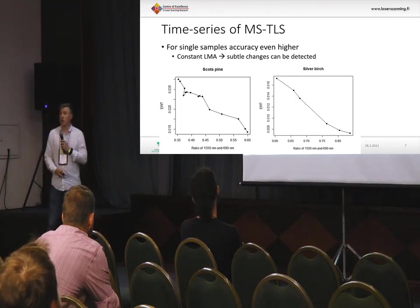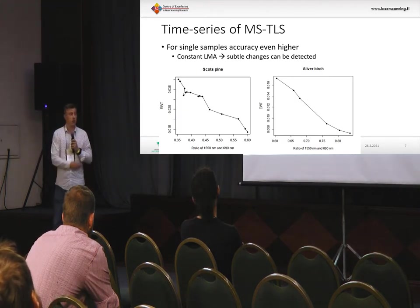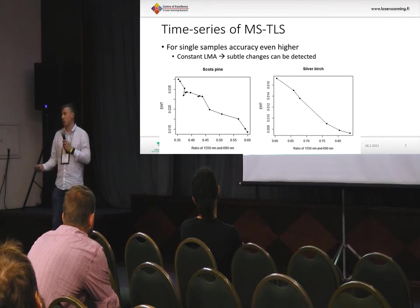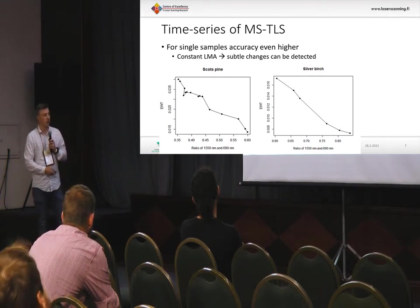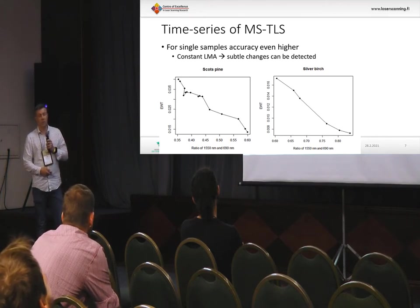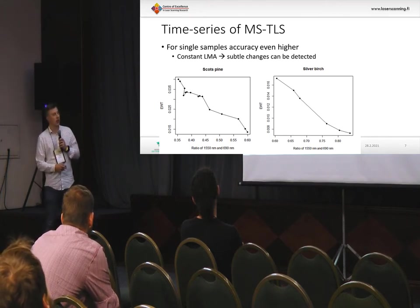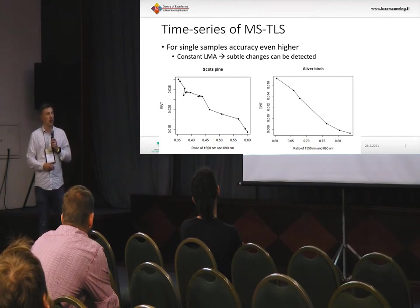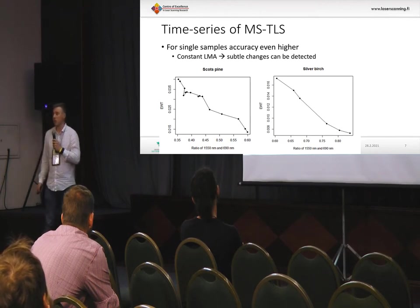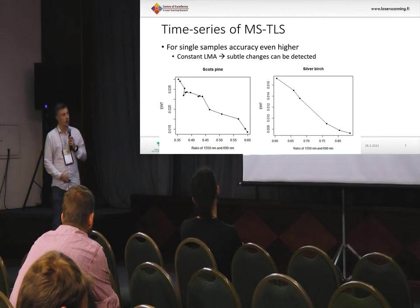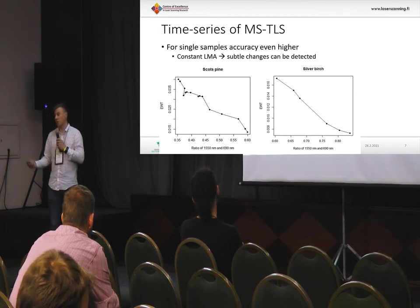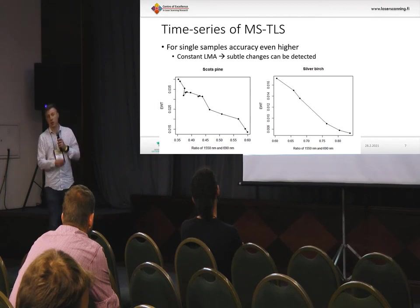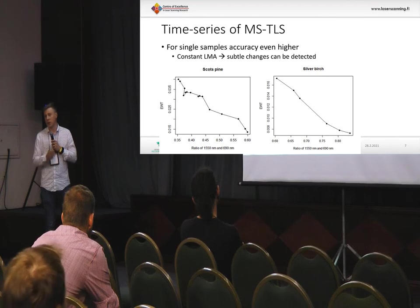If we look at a time series of just two different samples, we can see even higher correlations. The ratio of the two wavelengths and equivalent water thickness allows us to almost directly measure the differences in water content. That's because when we have a time series, the LMA of the samples is constant.